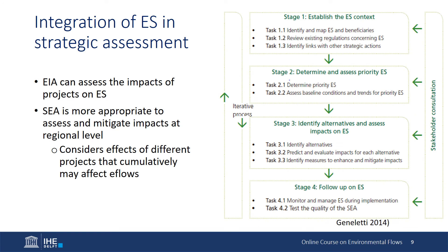The United Nations Environmental Program commissioned a guide to include ecosystem services in strategic environmental assessment. This assessment is more appropriate to assess impacts on environmental flows and the related ecosystem services because it is usually applied to regional or sectoral plans or other large-scale interventions. Although e-flows can be considered in environmental and social impact assessments for a project, such as a dam, a regional approach will allow the assessment of different alternatives to reduce the impacts at regional level. Strategic environmental assessment should consider how different projects or activities in a region can cumulatively affect ecosystem services and then identify alternatives to reduce the impacts in the region and not just in the area affected by a single project.